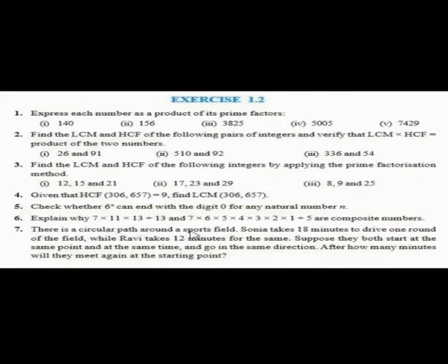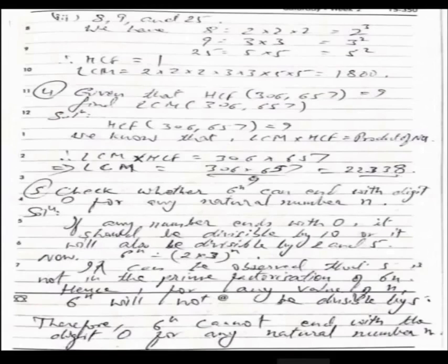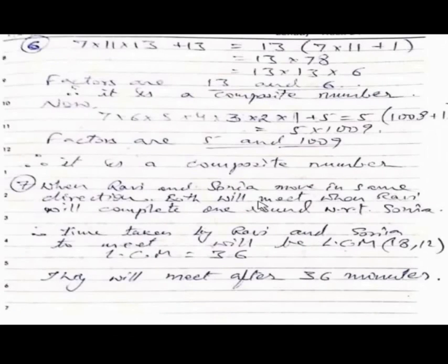The seventh question is: there is a circular path around a sports field. Sonia takes 18 minutes to drive one round of the field, while Ravi takes 12 minutes for the same. Suppose they both start at the same point and at the same time and go in the same direction. After how many minutes will they meet again at the starting point? It is basically asking the LCM of these two.